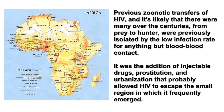Previous zoonotic transfers of HIV — and it's likely that there were many over the centuries, from prey to hunter — were previously isolated by the low infection rate from anything but blood-to-blood contact. It was the addition of injectable drugs, prostitution, and urbanization that probably allowed HIV to escape the small region in which it frequently emerged.